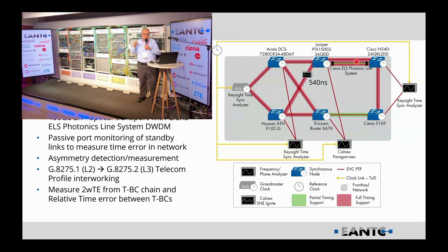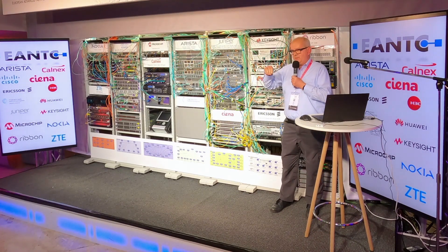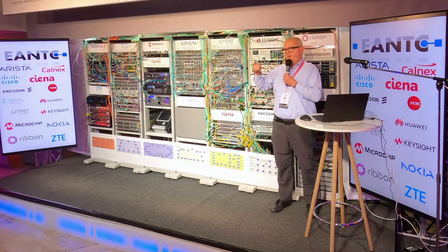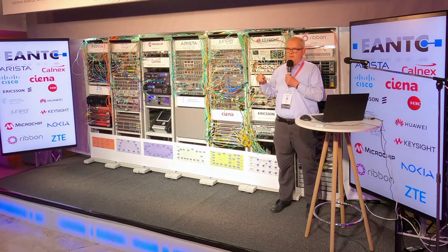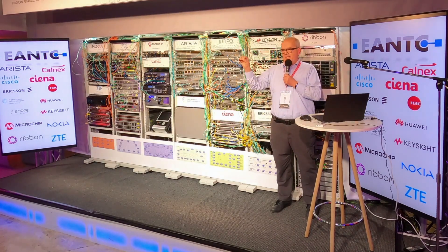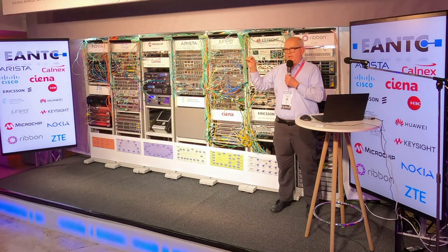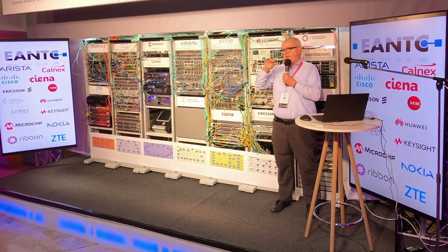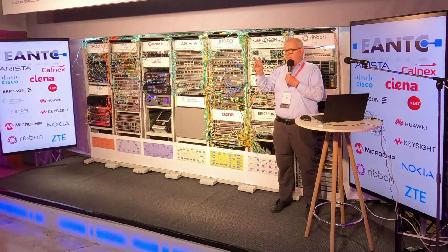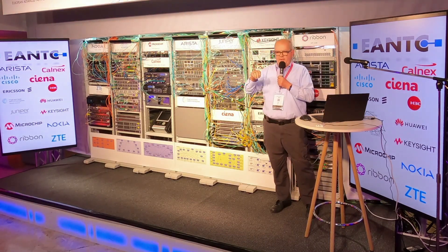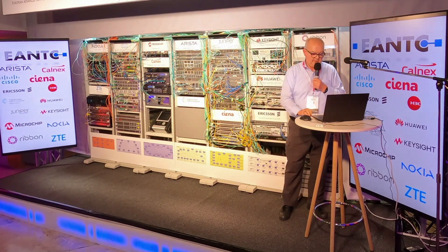We also have a Ciena DWDM device connecting the Juniper and the Cisco, connected at 400 Gig using ZR+ optics. We have a DWDM system in one of those links being used as the major timing signal. We also have a second 400 Gig link between the two devices which is a direct dark fiber, so what we can do is measure any offset between the DWDM link and the direct link.